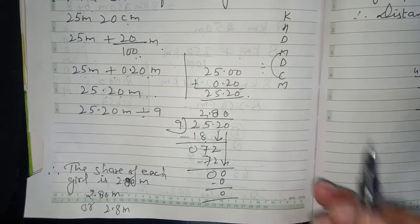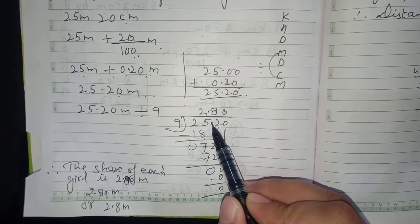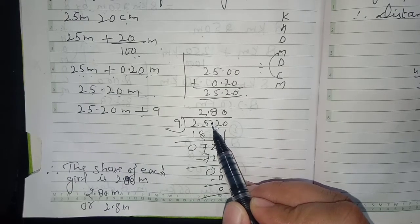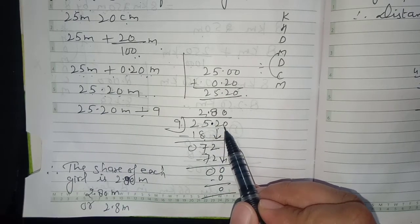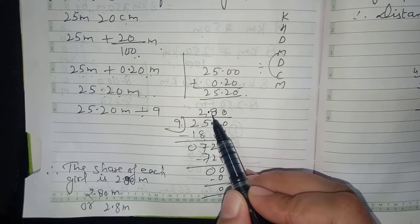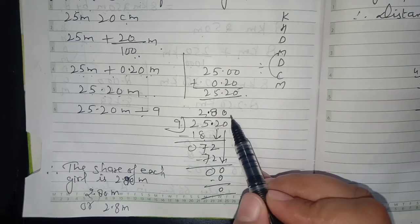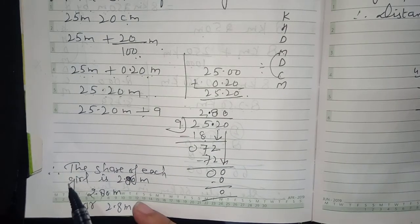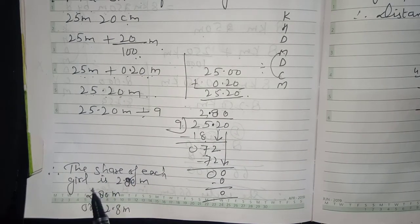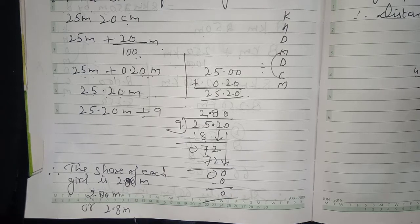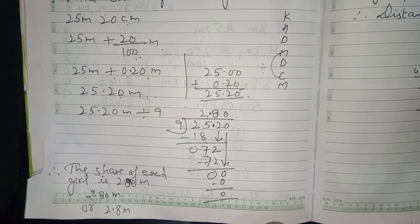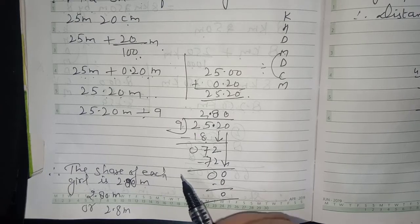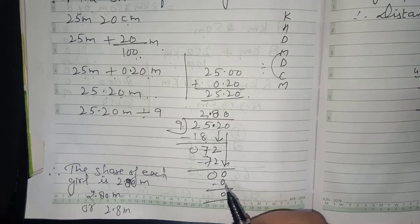After completing the division, we put the decimal. There are 2 digits after the decimal in the dividend, so in the quotient also there should be 2 digits after the decimal. Counting from the right, put the decimal before 2 digits. Therefore the share of each girl is 2.80 meter.